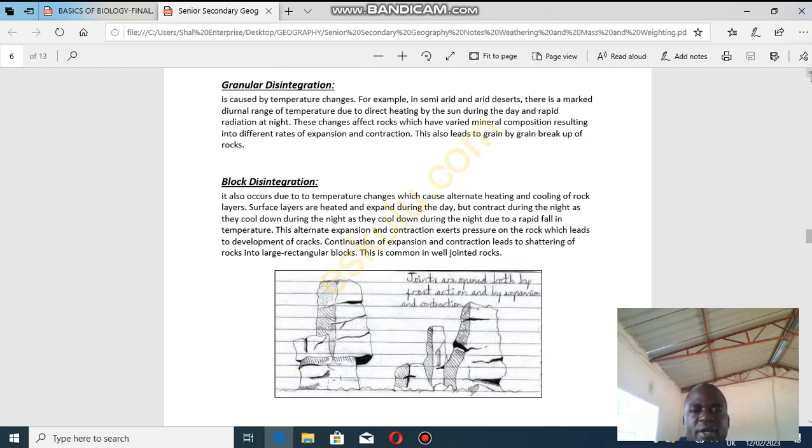These changes affect rocks which have varied mineral composition, resulting in two different rates of expansion and contraction. This also leads to grain by grain breakdown of rocks.